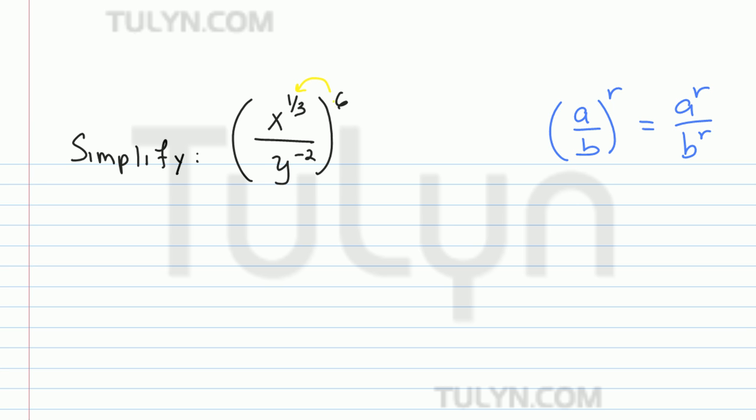What this means is that we move the 6 down here, to the numerator and to the denominator. So distributing that exponent of 6, we end up getting x to the 1 third to the 6th power on the top and y to the negative 2 to the 6th power on the bottom. Not so bad, we just distributed, right? So now,